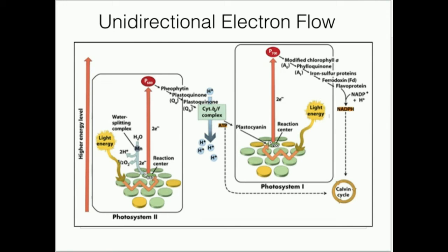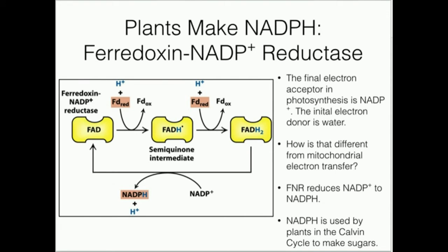Well, you don't see that exactly. But something interesting to note: what was the initial electron donor in cellular respiration? It was NADH. Look in your biochem textbook and you'll see that the initial electron donor was NADH, and that reduction was catalyzed by NADH dehydrogenase. Meanwhile, NADP+ is the final electron acceptor in photosynthesis.